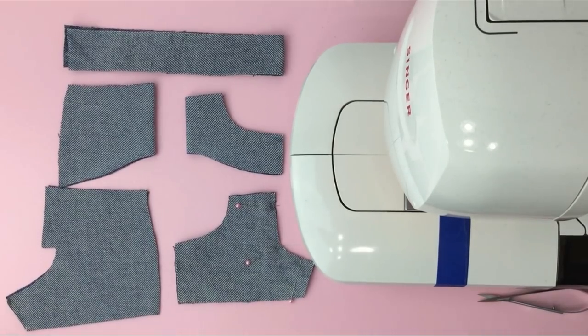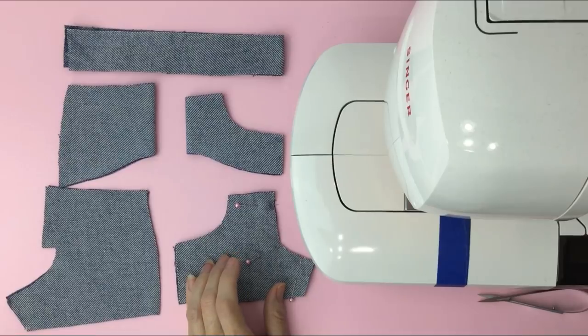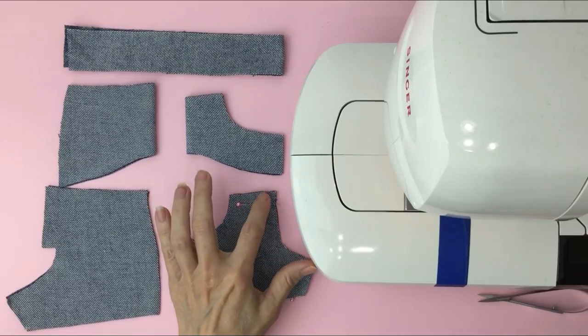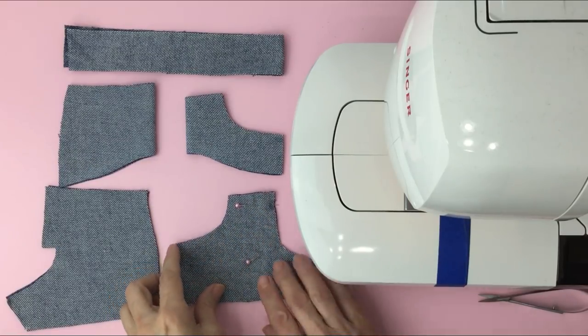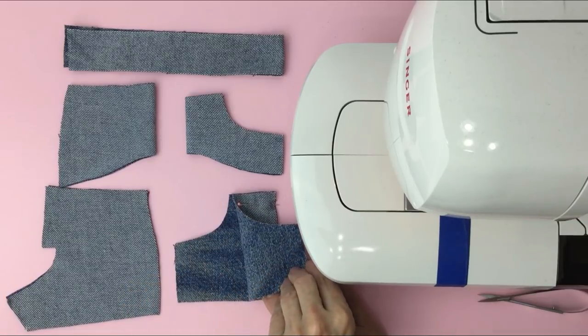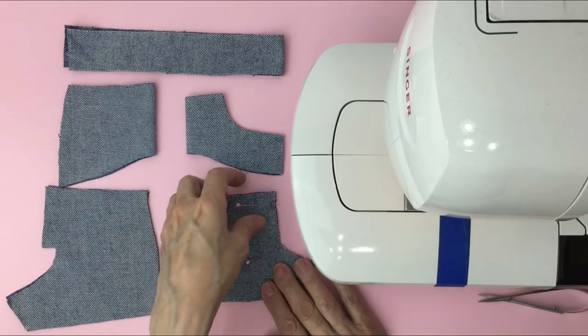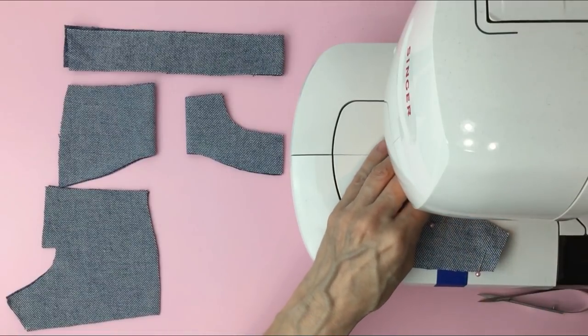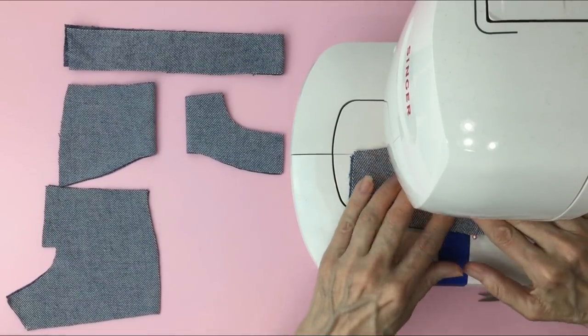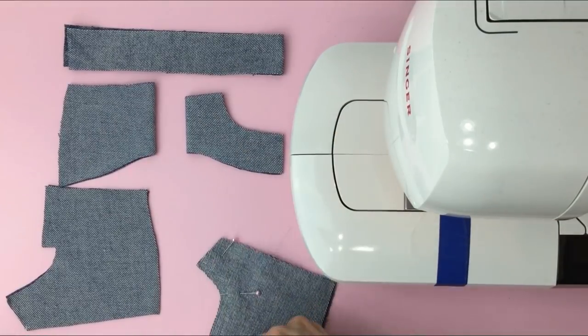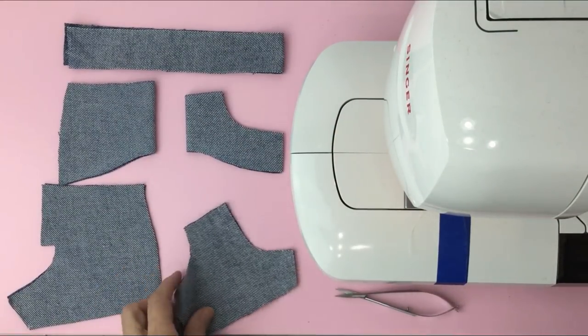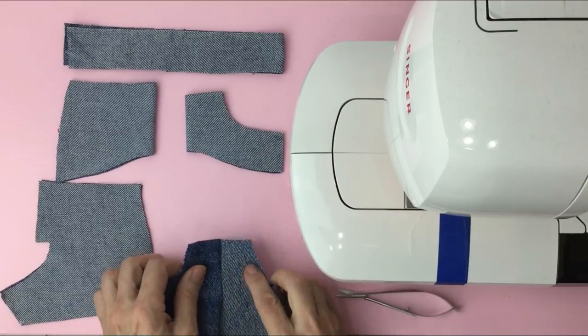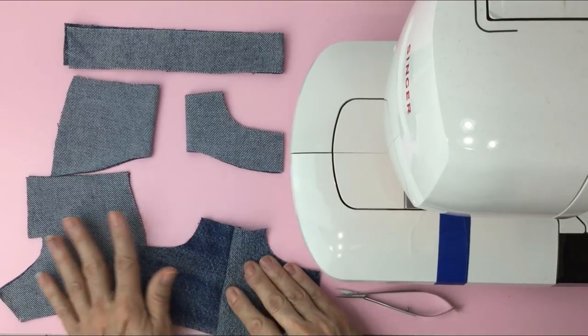Once we have our pieces cut out we're going to start off with the front of the shorts and we're going to sew right down the center front seam. I pinned this already and you want to make sure it's right sides together and I give it a 1/4 inch seam allowance on this pattern. We're going to open it up now. That's what you should have.